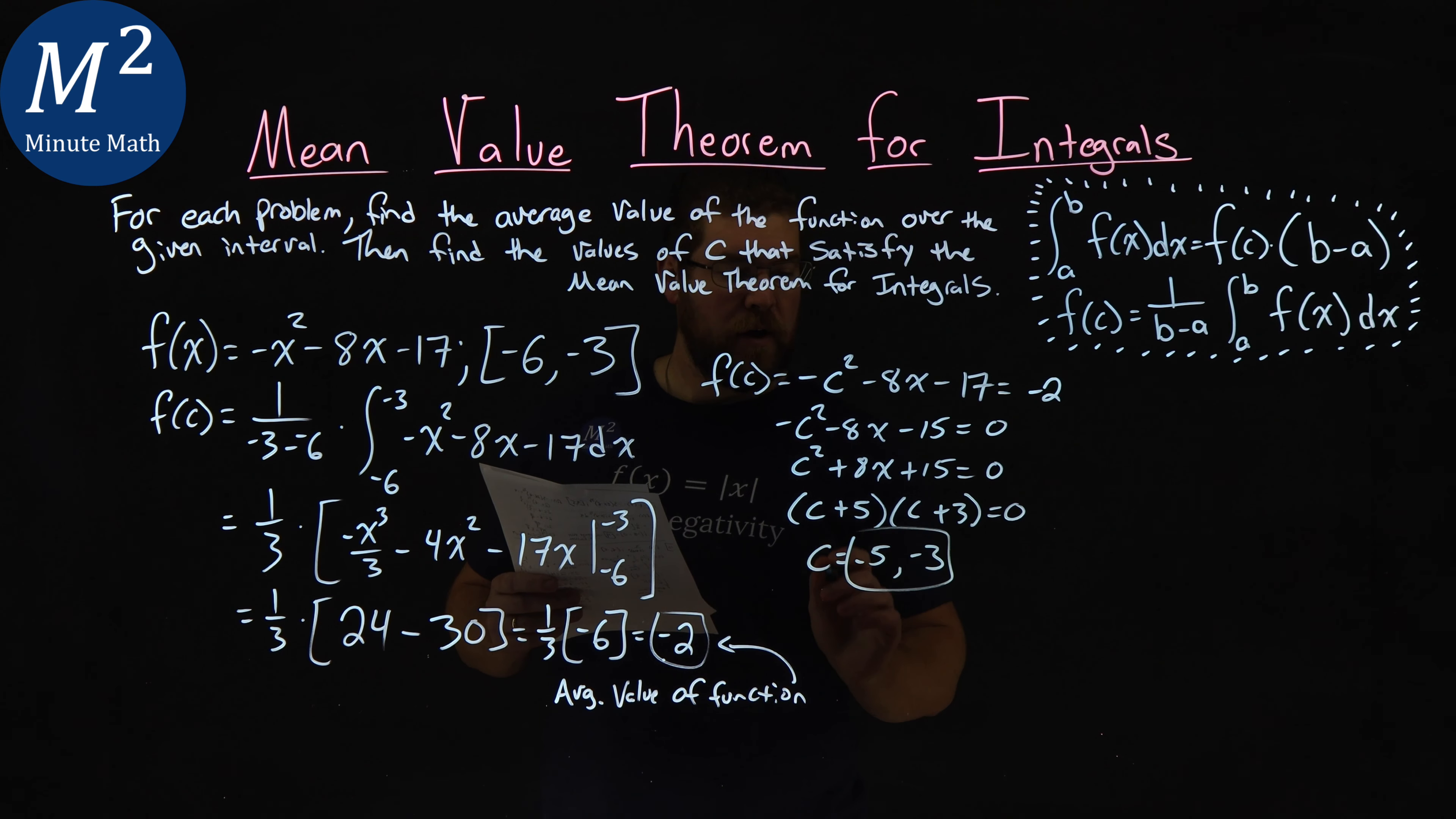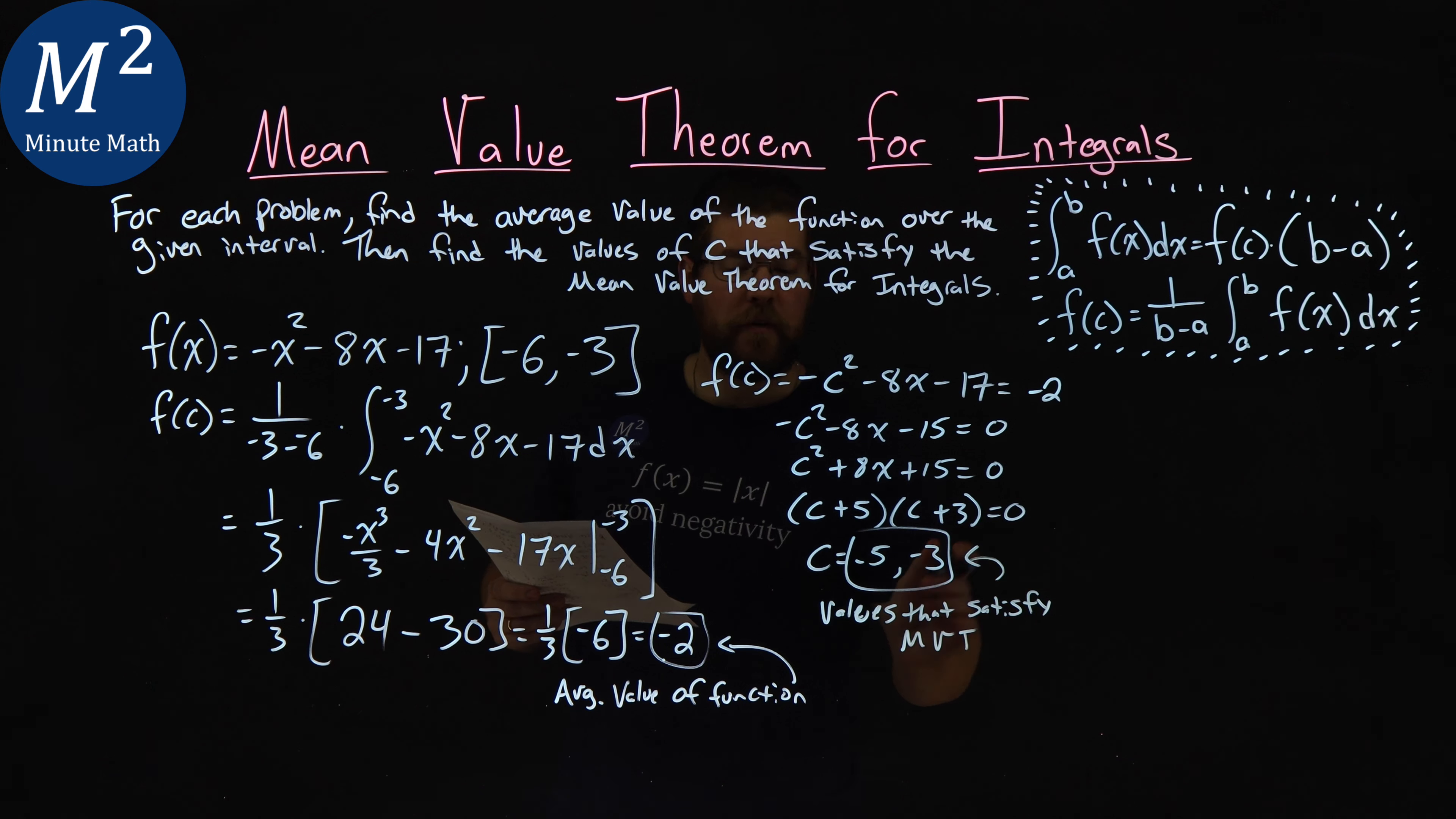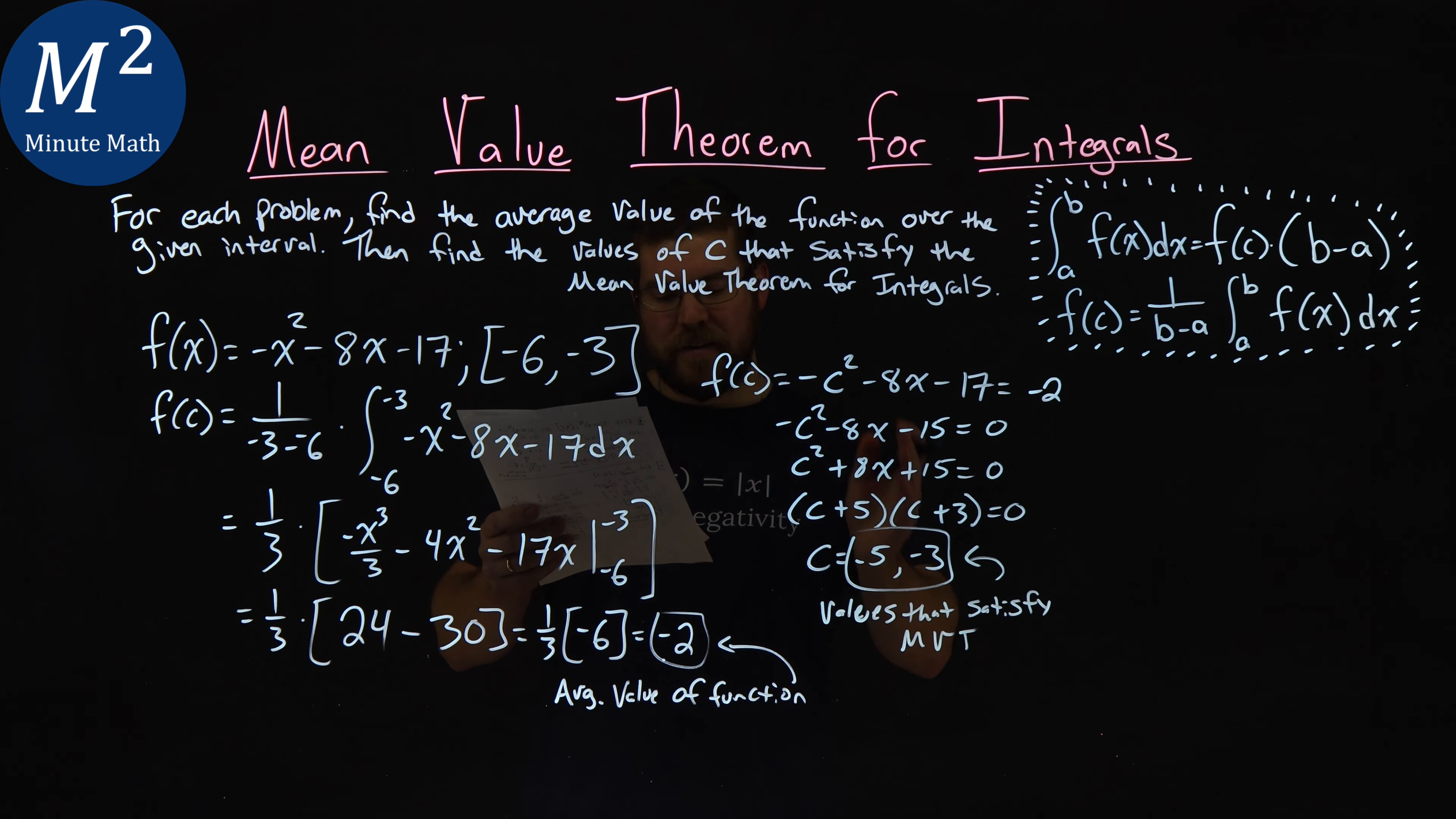Okay, so negative 5 and negative 3 are values that satisfy the MVT, mean value theorem. And there we have it. So my final answer here: the average value of the function over the interval is negative 2, and the values of c that satisfy the mean value theorem are negative 5 and negative 3.